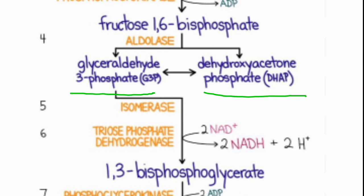The payoff phase of glycolysis yields ATP and NADH. One molecule of glucose yields two molecules of glyceraldehyde-3-phosphate, and both halves of the glucose molecule follow the same pathway in the second phase. After glycolysis, the gross production of ATP is 4 mol, but the net yield is 2 ATP because we already invested 2 ATP in the preparatory phase.